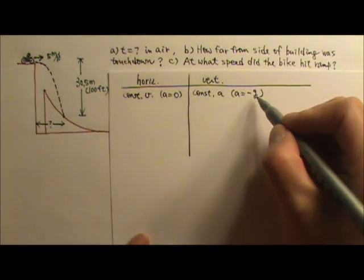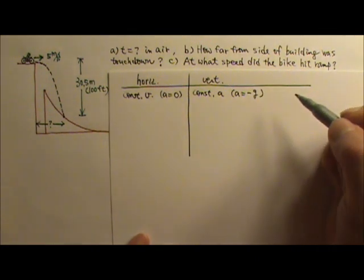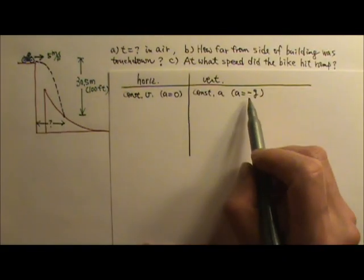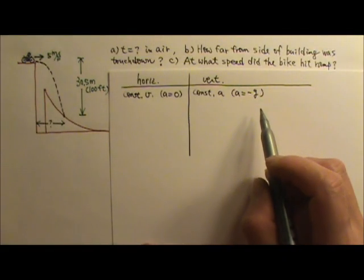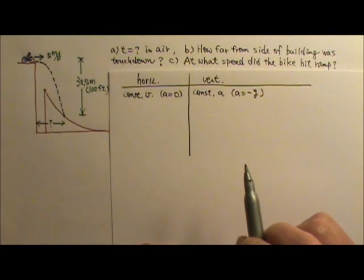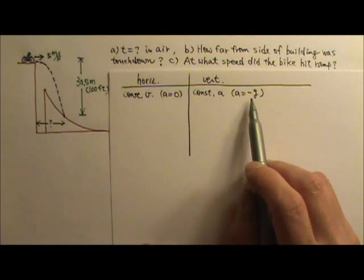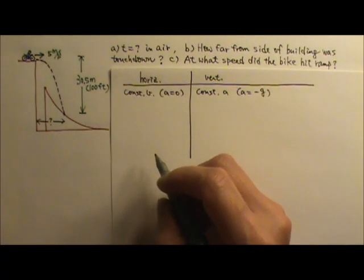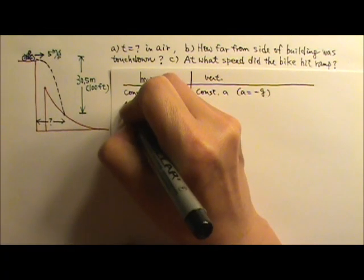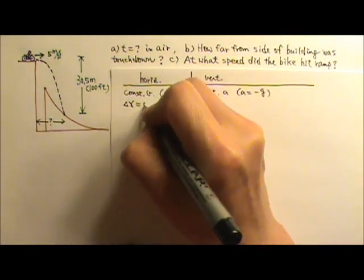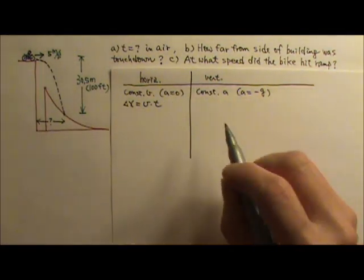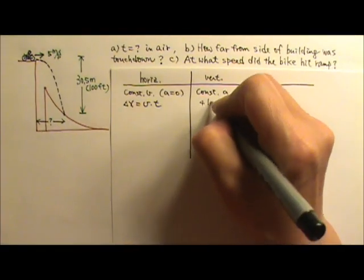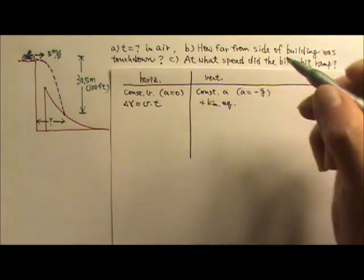By the way, g itself is a positive number. It is the amount of gravitational acceleration. And this negative sign tells you that it is in the negative y direction, a downward acceleration. For constant velocity motion, the only equation we need is the displacement delta x equals the velocity times time. For constant acceleration motion, we can use the four kinematics equations.